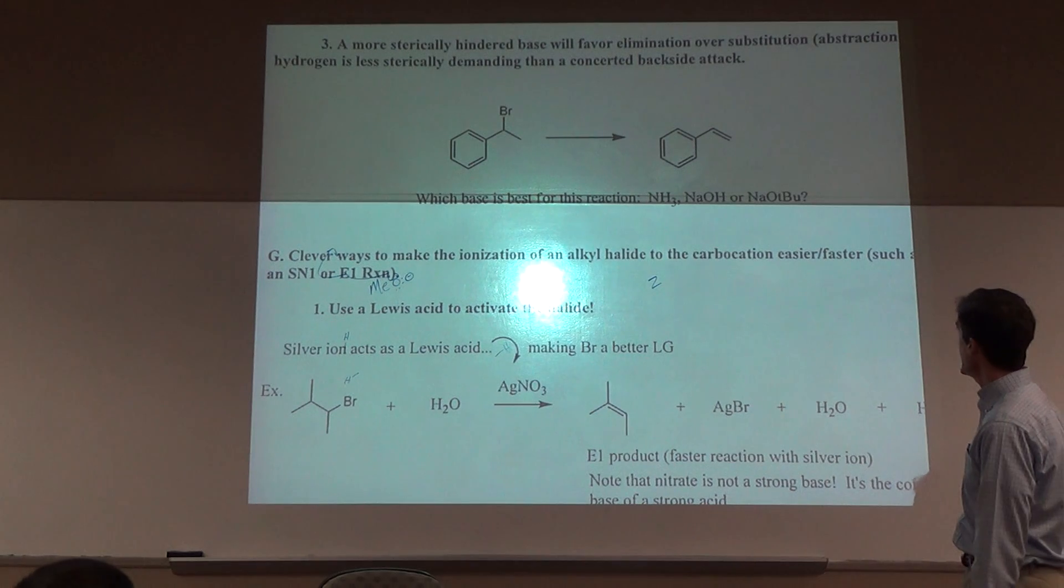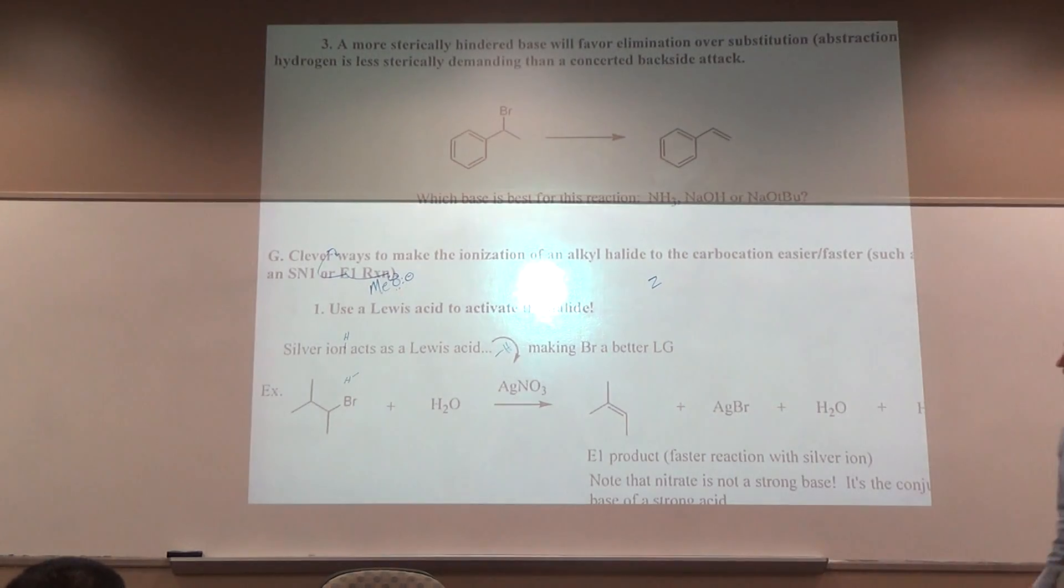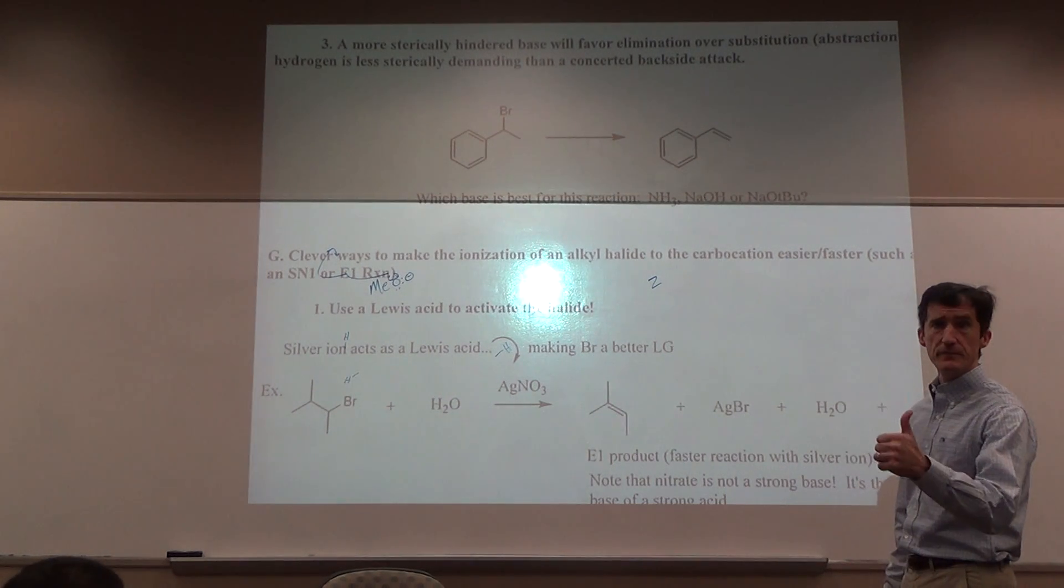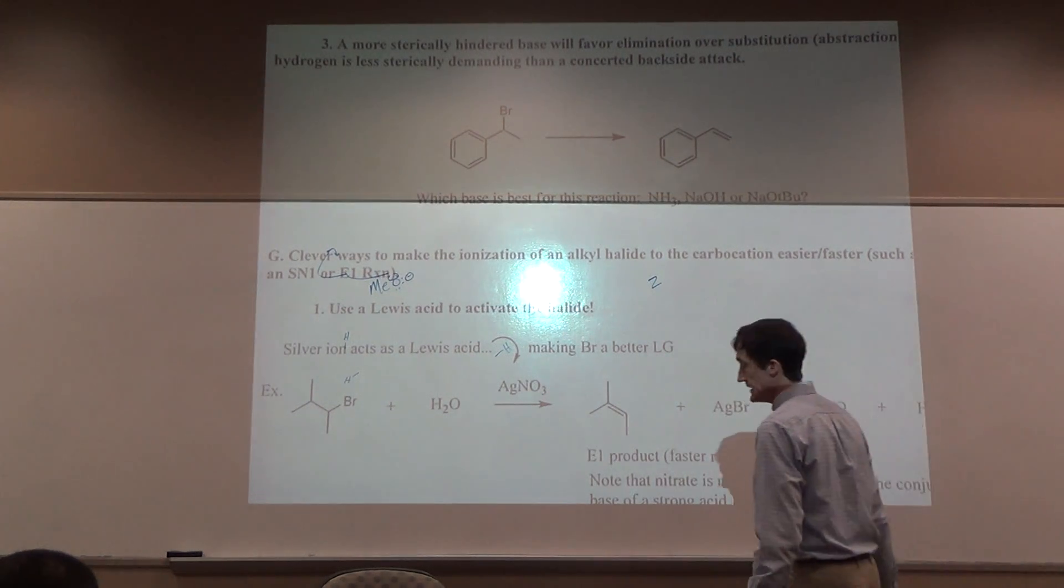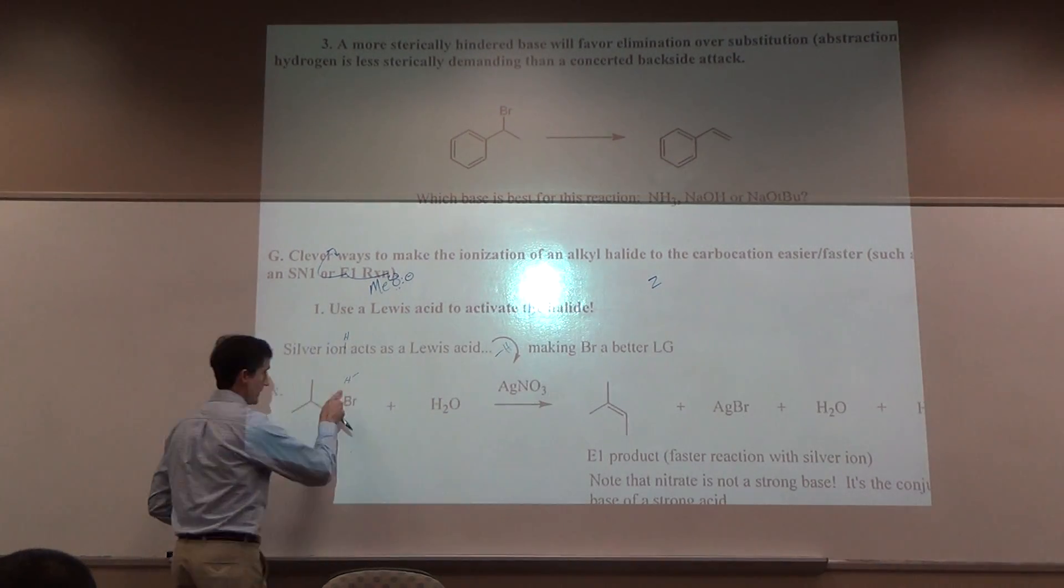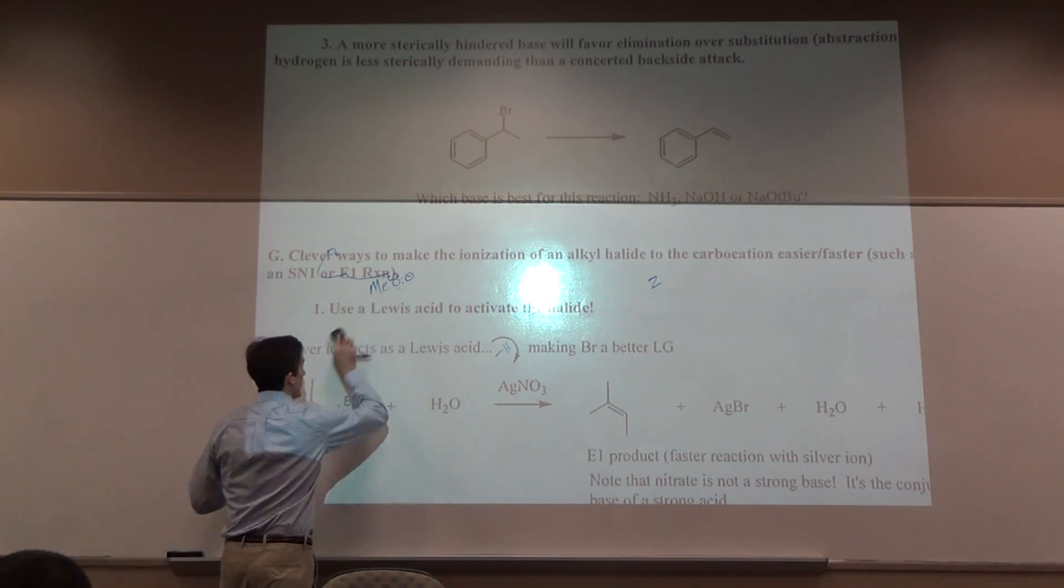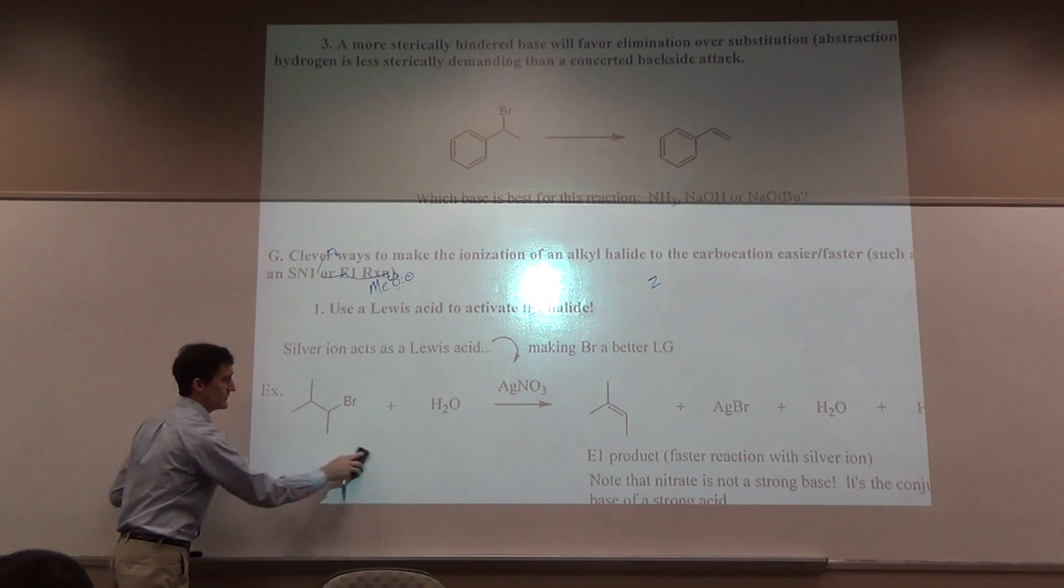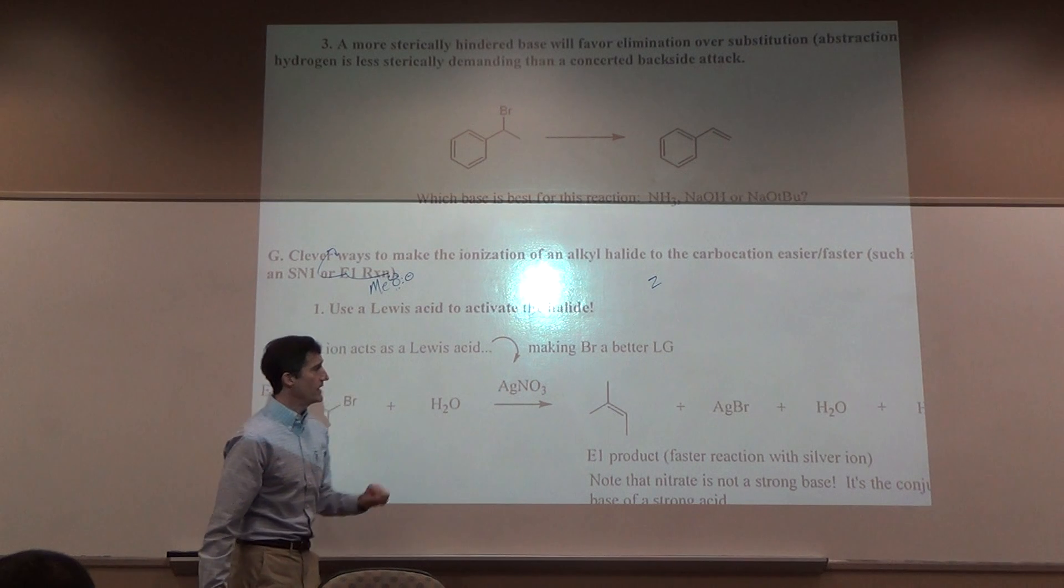Clever ways to make ionization of an alkyl halide easier or faster. To make an OH better leaving group, protonate it with strong acid. How can you make a halide a better leaving group? Well, typically you don't need to. But sometimes you may because maybe it's on a secondary carbon and it's just reluctant to ionize for some reason.